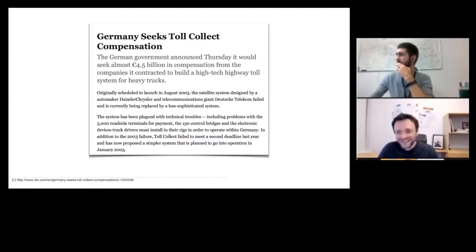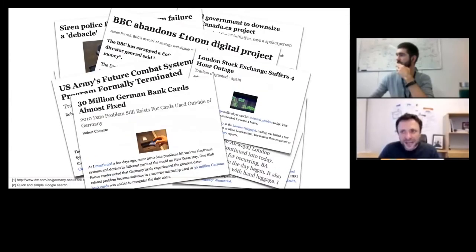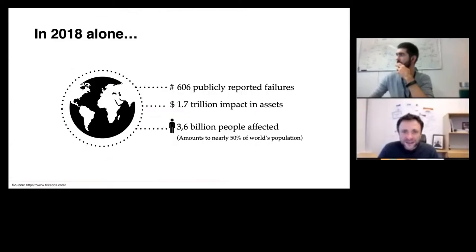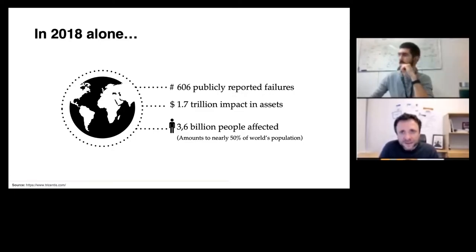This is just one story. Please don't think that it's only that one incident that has to do with incorrect requirements engineering. The news is in fact full of stories that have in one form or the other to do with insufficient requirements engineering. In 2018 alone, only considering publicly reported failures — software failures that made it into the news — considering only 606 of them, we had an impact of software failures impacting nearly half the world population.